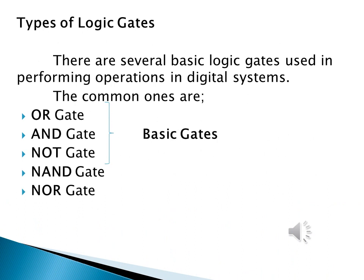Now we have come to the types of logic gates. There are several logic gates used to perform operations in digital systems, but the common ones are OR gate, AND gate, NOT gate, NAND gate, and NOR gate. The OR gate, AND gate, and NOT gate are the basic gates, since with the help of these gates only we can form the basic circuit.